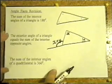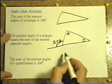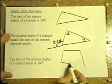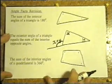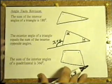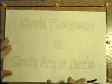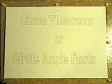Here's another angle fact. The sum of the interior angles of a quadrilateral is 360 degrees. Any four-sided shape, it doesn't matter how long the sides are — it's called a quadrilateral — and the angles add up to 360 degrees. These are angle facts. So when we talk about circle theorems, it would be easier to call them circle angle facts. They're just facts that you have to learn. We're going to be going through the angle facts in a circle — circle theorems.